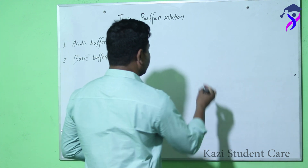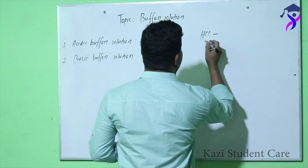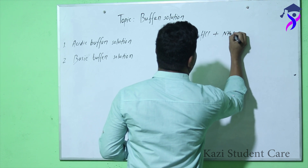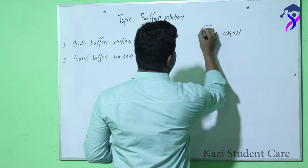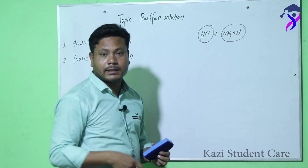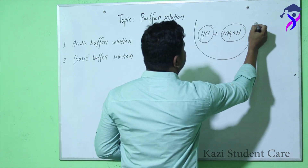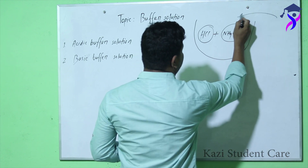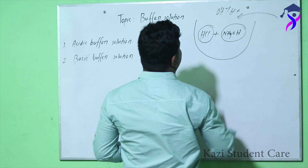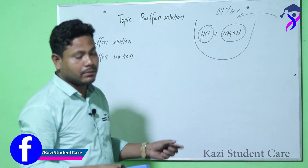For example, HCl and ammonium hydroxide. HCl is an acid and ammonium hydroxide is a base. If in this solution we add a small amount of acid or base and the pH value remains the same, it is known as buffer solution.